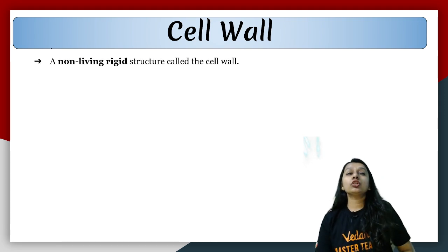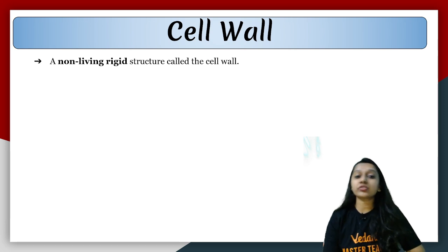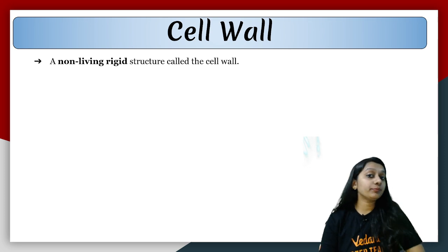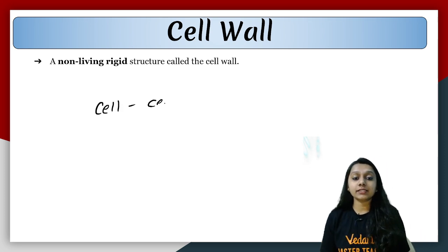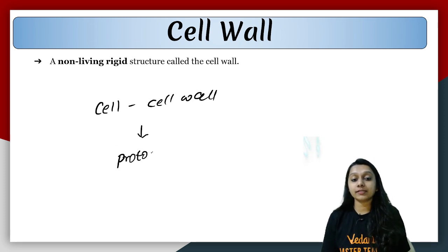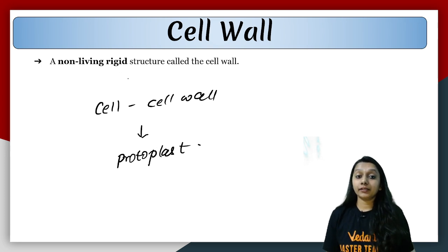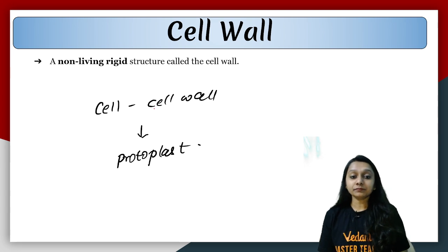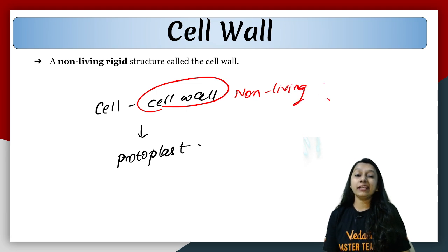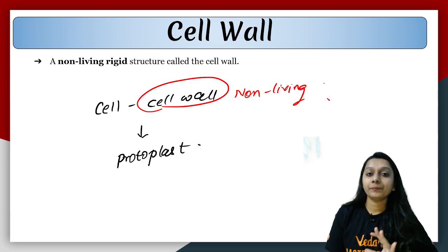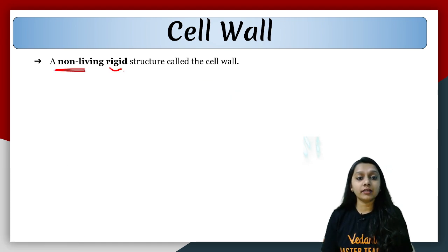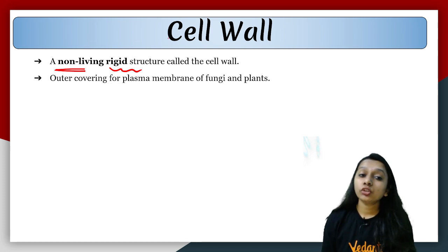If we talk about the cell wall, it is a very rigid structure which will not change shape. Very important point to remember: if you remove the cell wall from a cell, the remaining living part is called a protoplast. But the cell wall itself is a non-living component. So looking at the cell — the cell is living except for the cell wall. The cell wall is not living — it is a non-living, rigid structure.